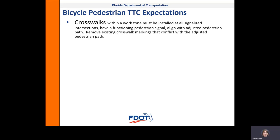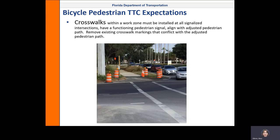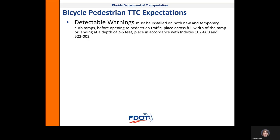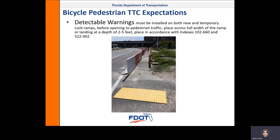Crosswalks within a work zone must be installed at all signalized intersections, have a functioning pedestrian signal, and align with the adjusted pedestrian path. Remove existing crosswalk markings that conflict with the adjusted pedestrian path. Detectable warnings must be installed on both new and temporary curb ramps before opening to pedestrian traffic. Place across the full width of the ramp or landing at a depth of 2 to 5 feet, in accordance with indexes 102-660 and 522-002.